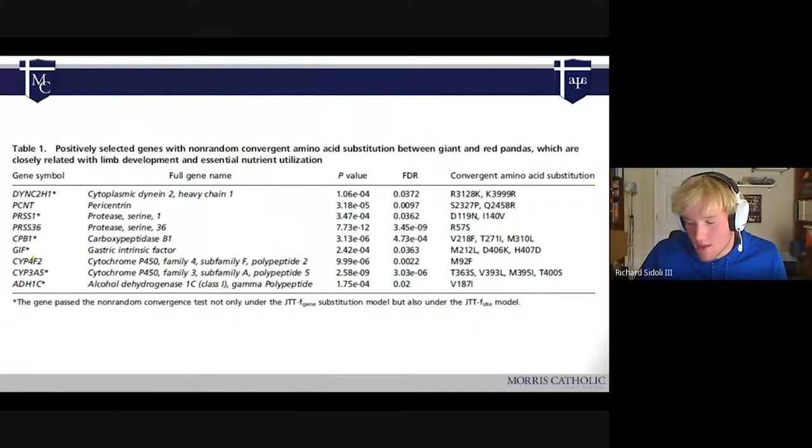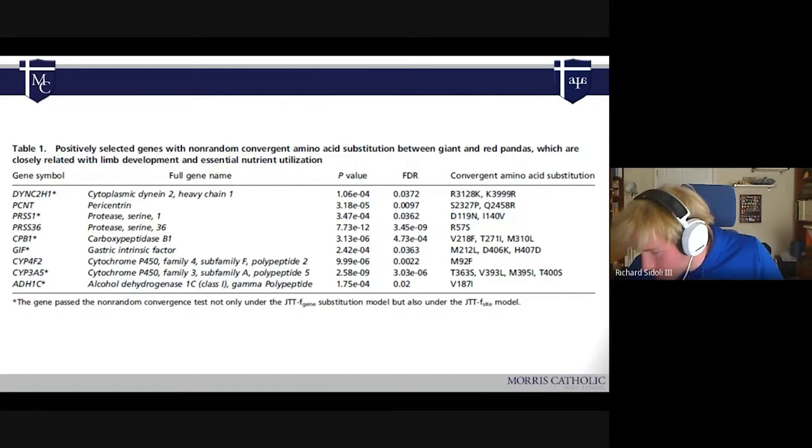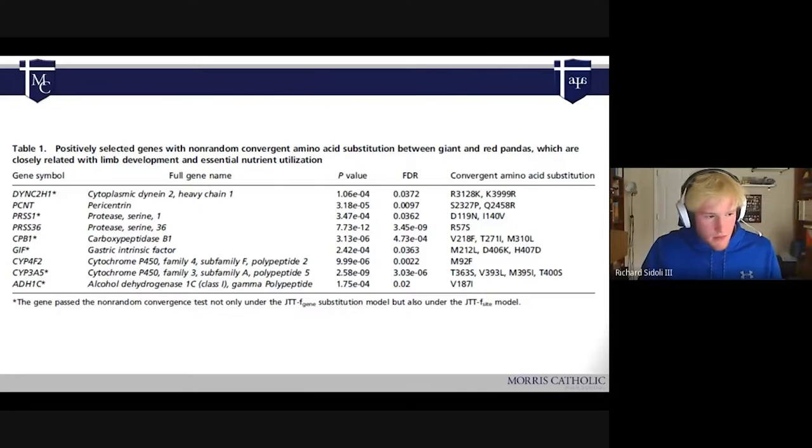The ones on the bottom deal with B12 deficiency or vitamin B12 deficiency. GIF deals with the actual absorption of B12. So this allows it to better absorb the amount of B12 that is in bamboo. They're still not able to get enough B12 and experience a vitamin B12 deficiency. That causes angiosclerosis, which is a cardiovascular issue. This gene, the cytochrome P450, actually decreases the effect of the angiosclerosis on the pandas. So though they might have some effect from it, it's not going to be as detrimental.